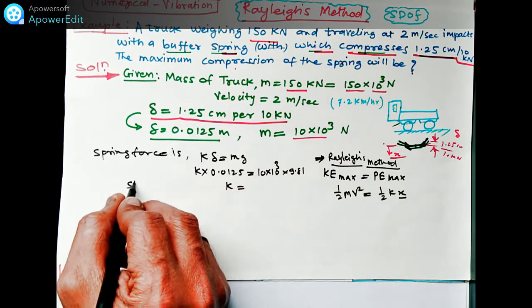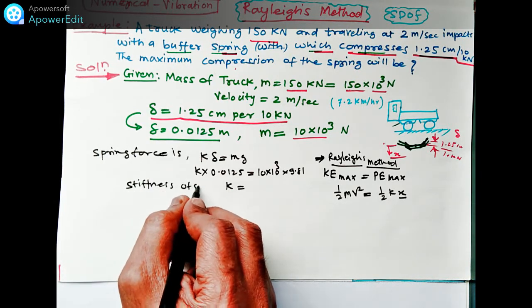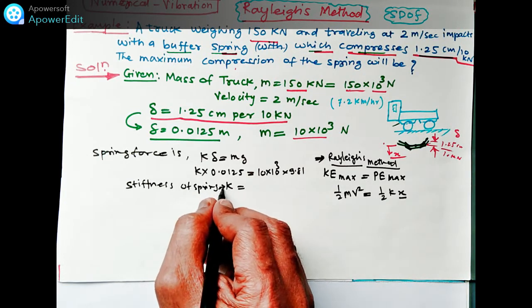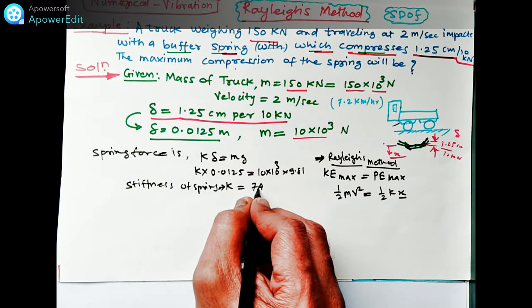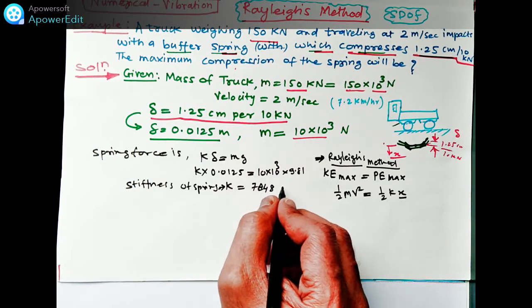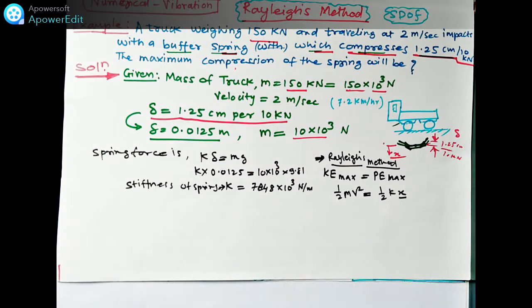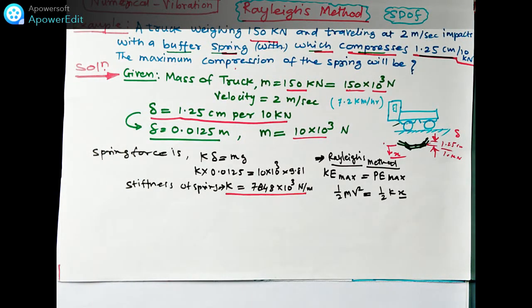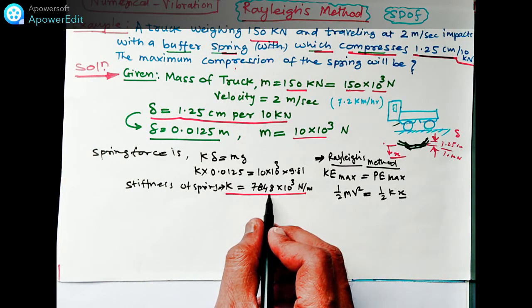Spring stiffness. This K, how much? 7.848 into 10 raise to 5 per meter. This value we apply to obtain the value of K. That is the spring stiffness. We know this. Now we got this value of K.